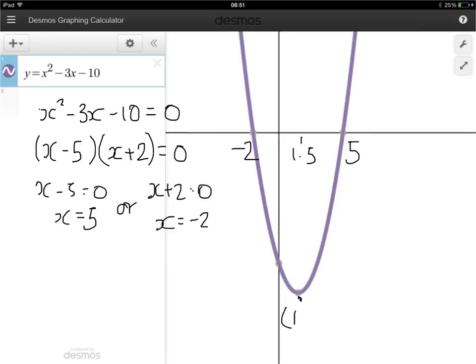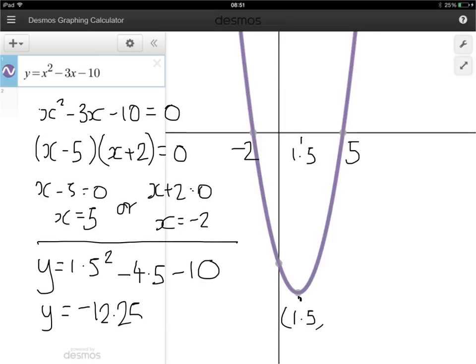Now we need to know what the y-coordinate is when x is 1.5 in order to put the other part in. So again, we go back to our equation and we substitute in 1.5 in place of the x. So we get y equals 1.5 squared minus 3 times 1.5, which is 4.5, minus 10. If you work that out on the calculator, you'll get y equals minus 12.25. So at the axis of symmetry here, it's the coordinate 1.5, negative 12.25. You should check that that makes sense. This obviously looks like the point, 1.5 minus 12.25. So that makes sense.